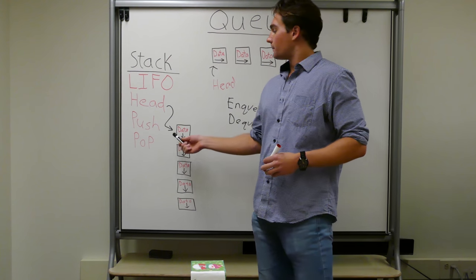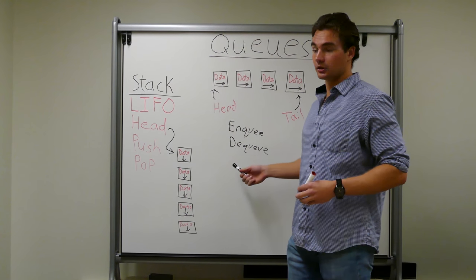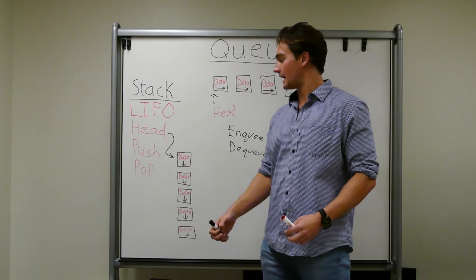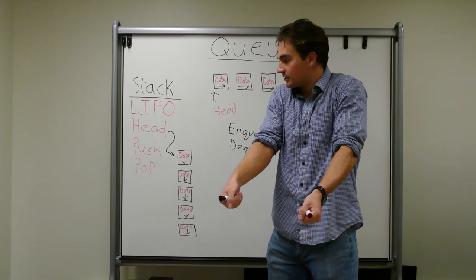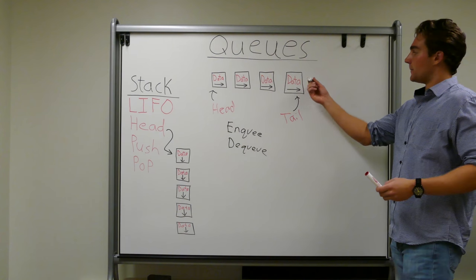The operations are push and pop for a stack, enqueue and dequeue for a queue. Push and enqueue are very similar. Push, you add a node on top of the stack, where enqueue is you add a node to the back of the line.